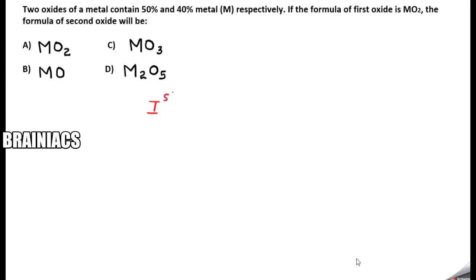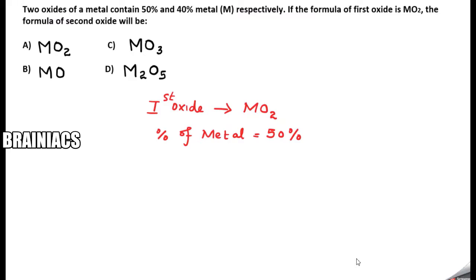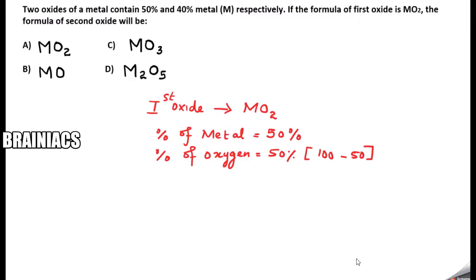So my first oxide is MO₂. In the first oxide, the percentage of metal is given as 50%. So what will be the percentage of oxygen? The percentage of oxygen is 50%, because total is 100, so 100 minus 50 gives us 50%.